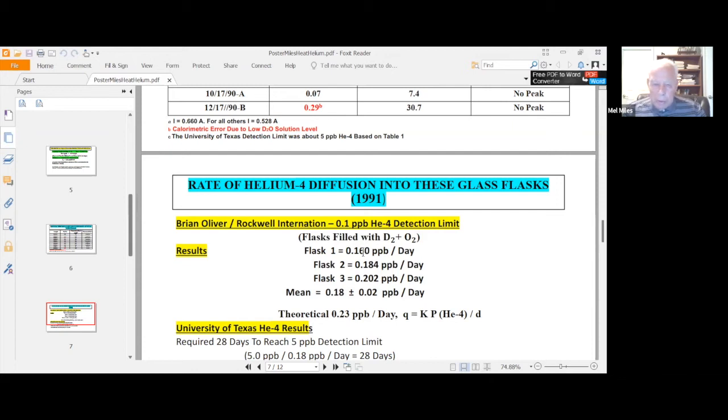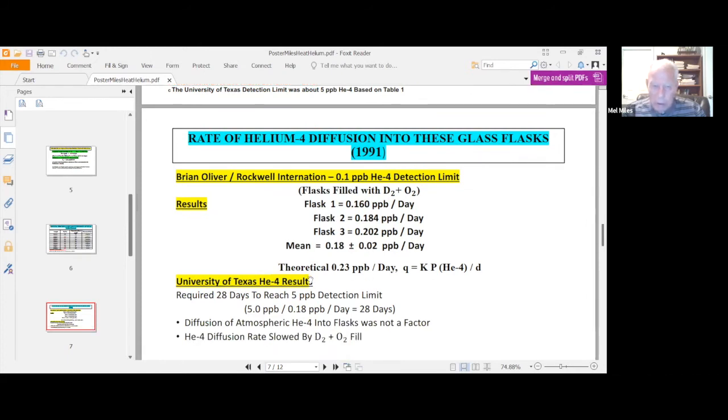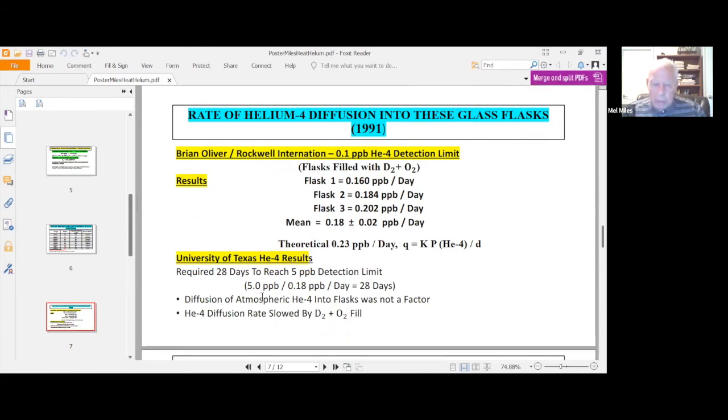These are the flasks filled with D2O2, same as experiments. And the mean value is 0.18 parts per billion per day. And our detection limit, based on Ben Bush's table, is about 5 parts per billion. And so dividing one by the other, it would take about 28 days for the helium-4 to equal, just equal our detection limit. And most experiments were done well before, in much less time than we show there.